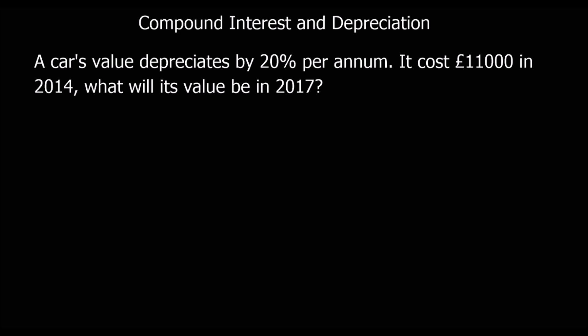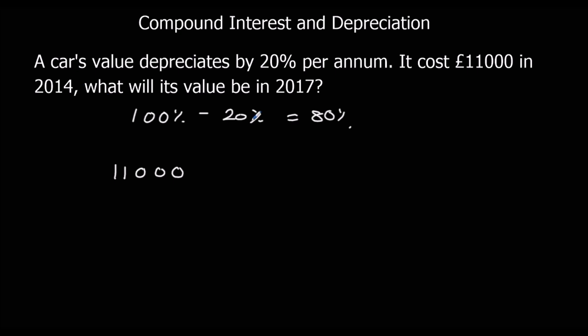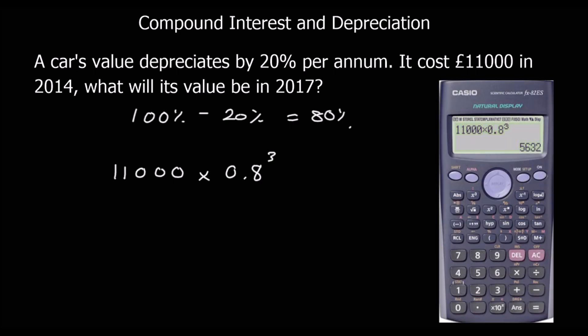The opposite of compound interest — a repeated percentage change going down — is called depreciation. A car's value depreciates by 20% per annum. We want 100% take off 20%, so we want 80% each year. The car costs £11,000 and we want 3 years of change — from 2014 to 2017 — so it's times 0.8 cubed. The answer is £5,632.